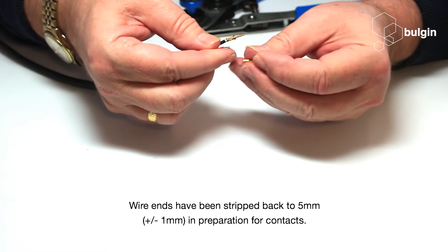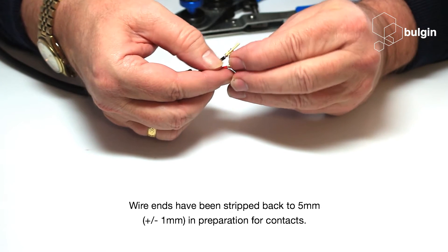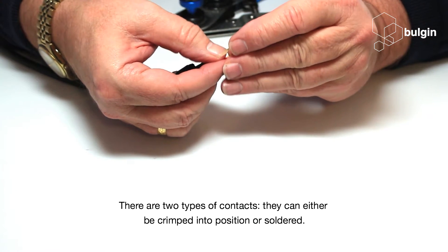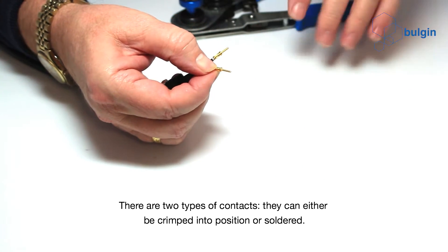Wire ends have been stripped back to 5mm, plus or minus 1mm, in preparation for contacts. There are two types of contacts. They can either be crimped into position or soldered.